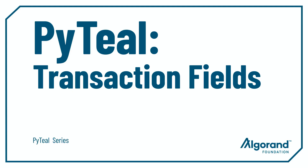Today we learned about what transaction fields and global parameters are and how you can use them within your smart contract to access information about transactions and the current state of the Algorand blockchain. That's it for today — let's move on to the next video.